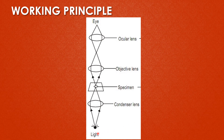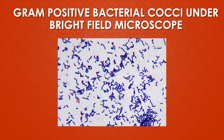First, the light from the light source passes to the condenser, which condenses the light and passes it to the specimen. From the specimen, light passes to the objective lens, which is available in various magnifications like 10x, 40x, and 100x. From the objective lens, the light passes through the ocular lens or eyepiece, and from the eyepiece we visualize the object of the specimen. This image shows gram-positive cocci under the bright field microscope.